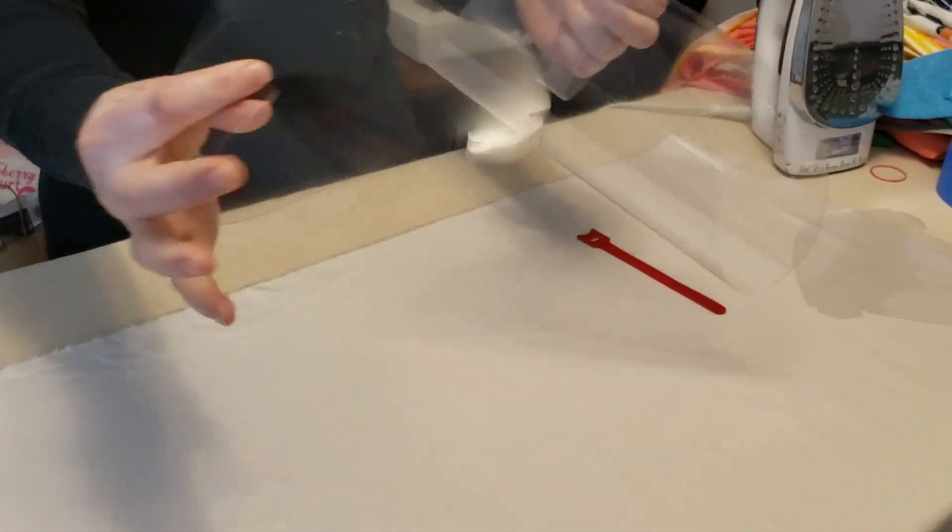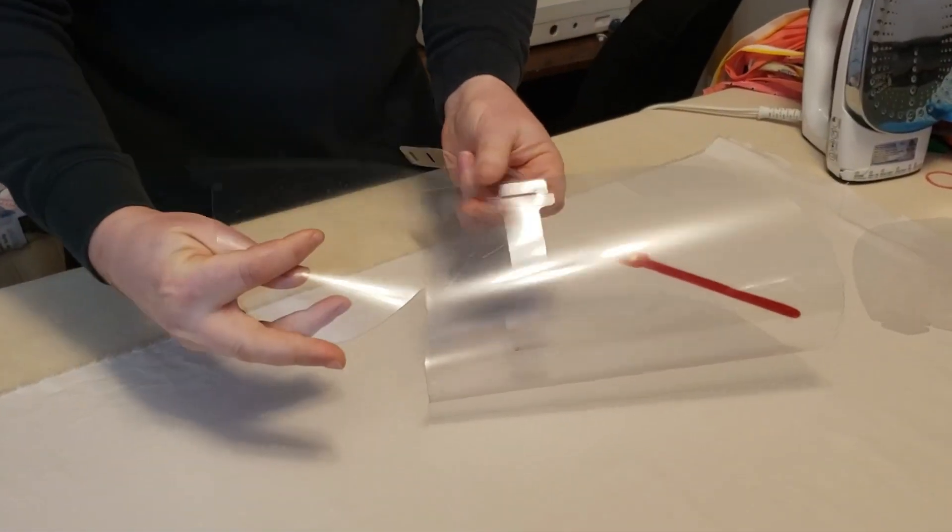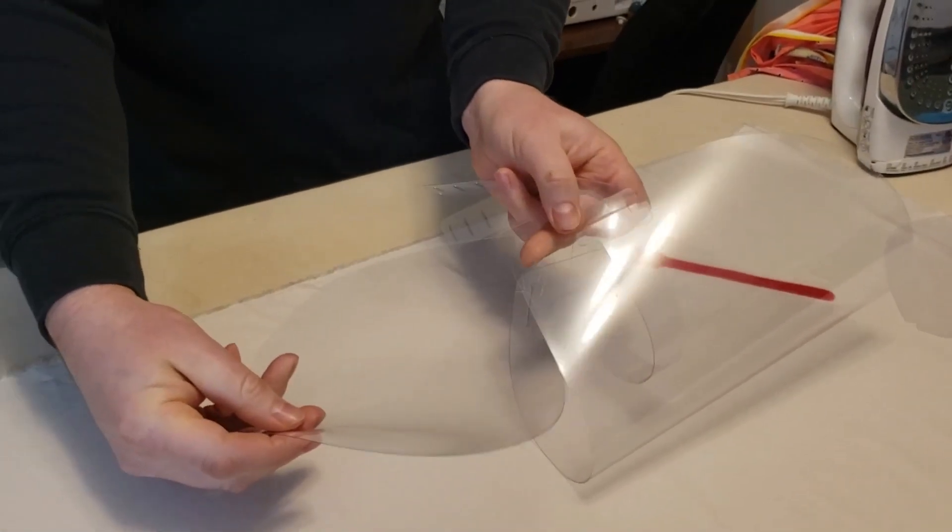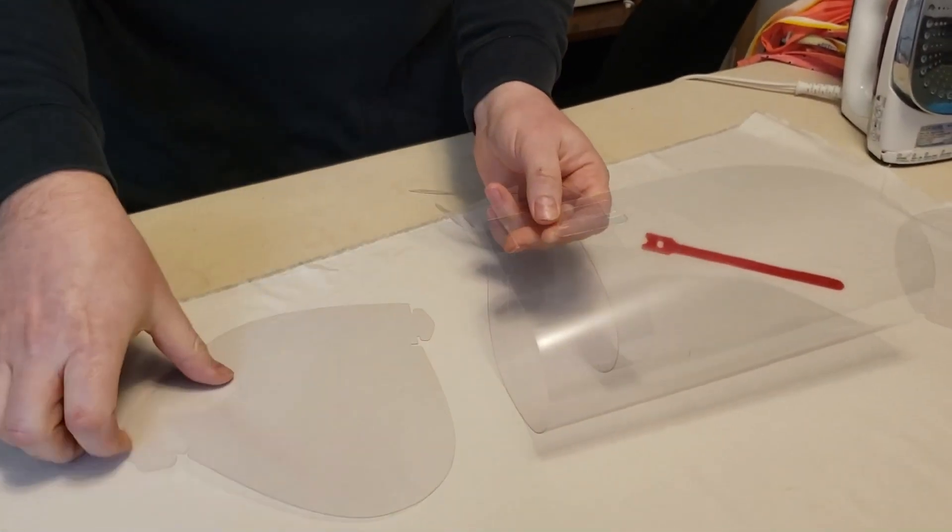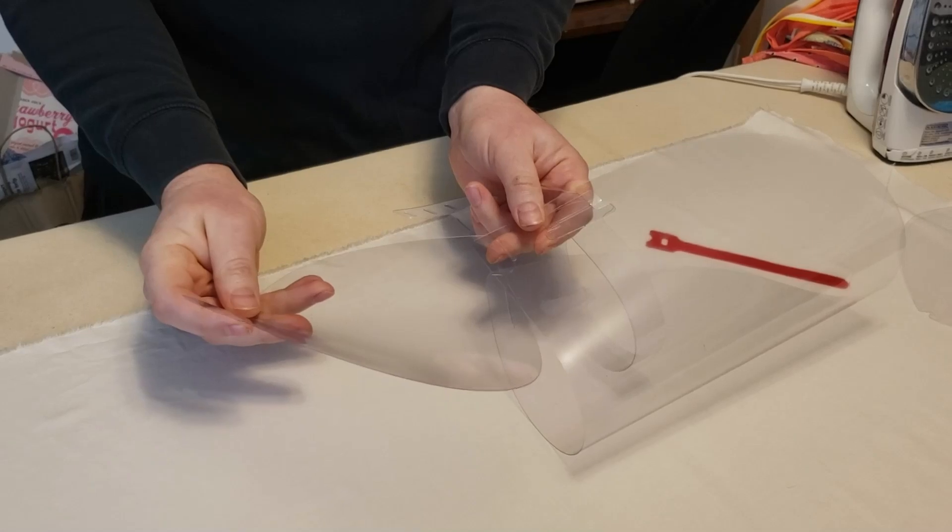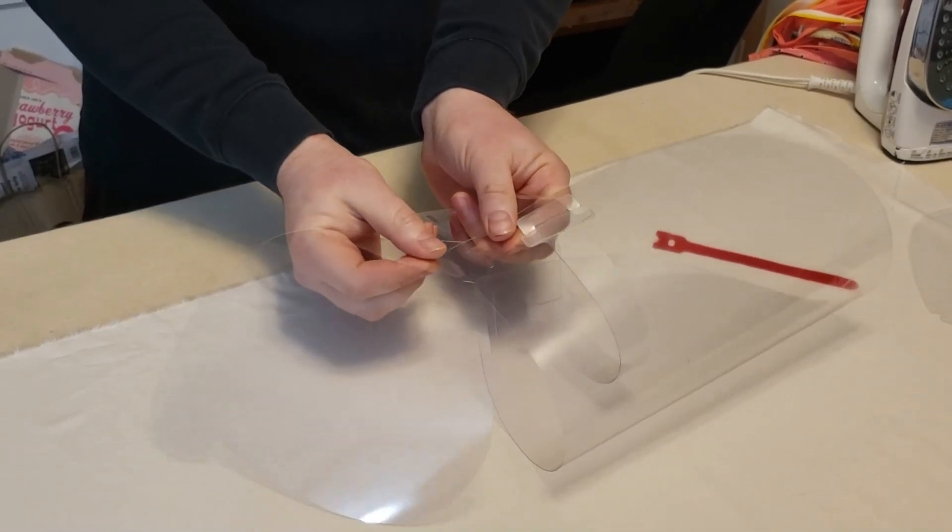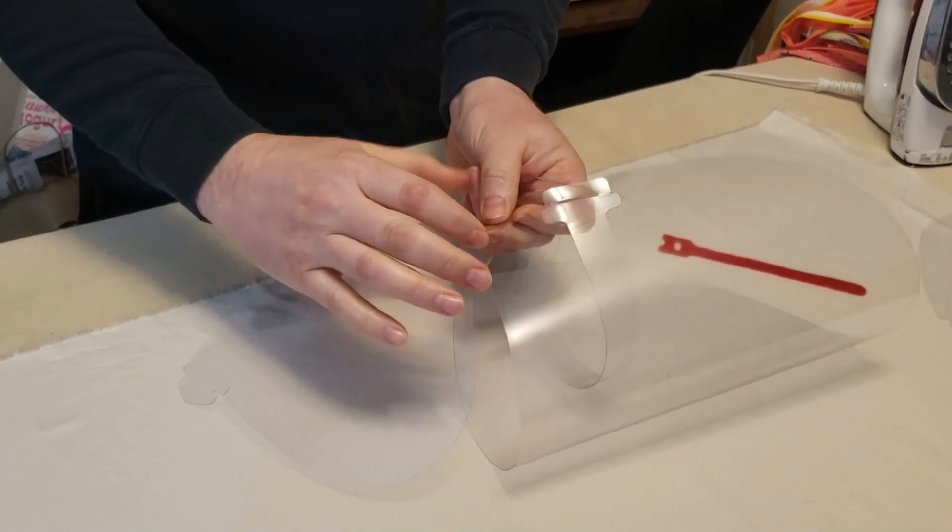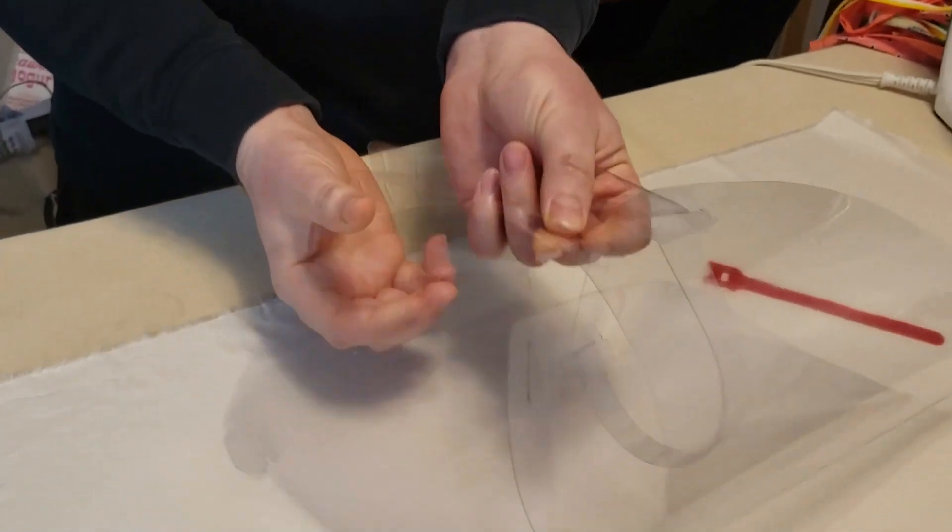So now we're going to put the cap on. You want to position your cap. Now remember, this is the outside of the mask here. So you're going to slide this to the outside. If you notice, that's not going to fit. So what you do is you just bend down one of these tabs. It'll bend back no problem.